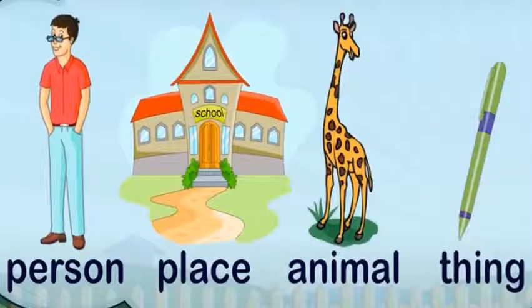Look at this slide. Nouns are the names of a person — you can say this person's name is Ricky. And place — you can say the place name is Lahore Grammar School. An animal — you can name the animal, it's a giraffe. And thing — you can say it's a pen. So nouns are the name of a person, place, animal, or thing.